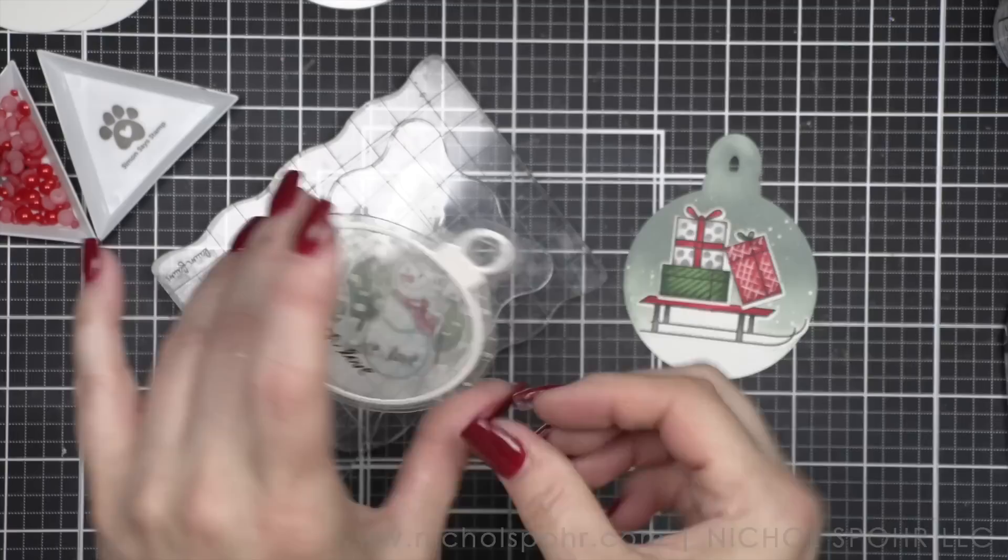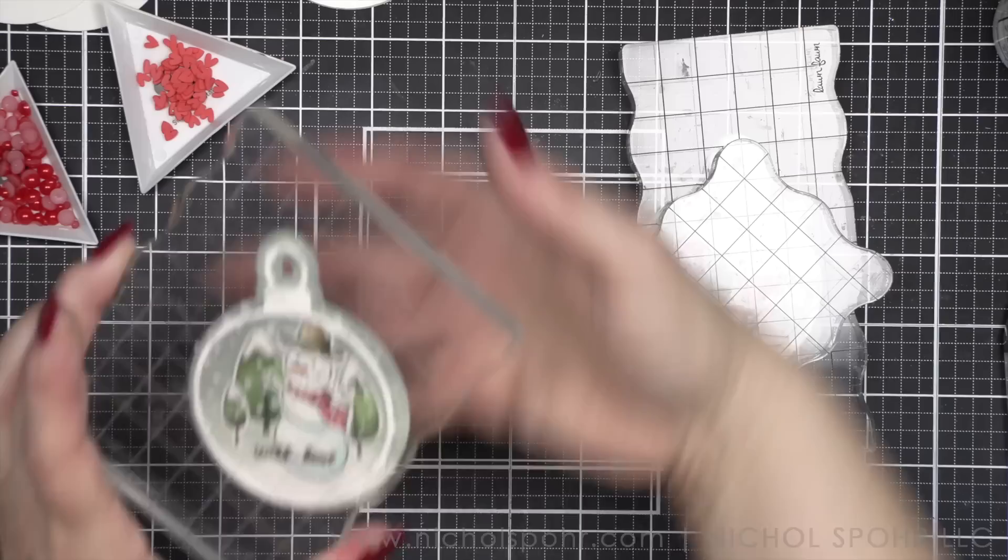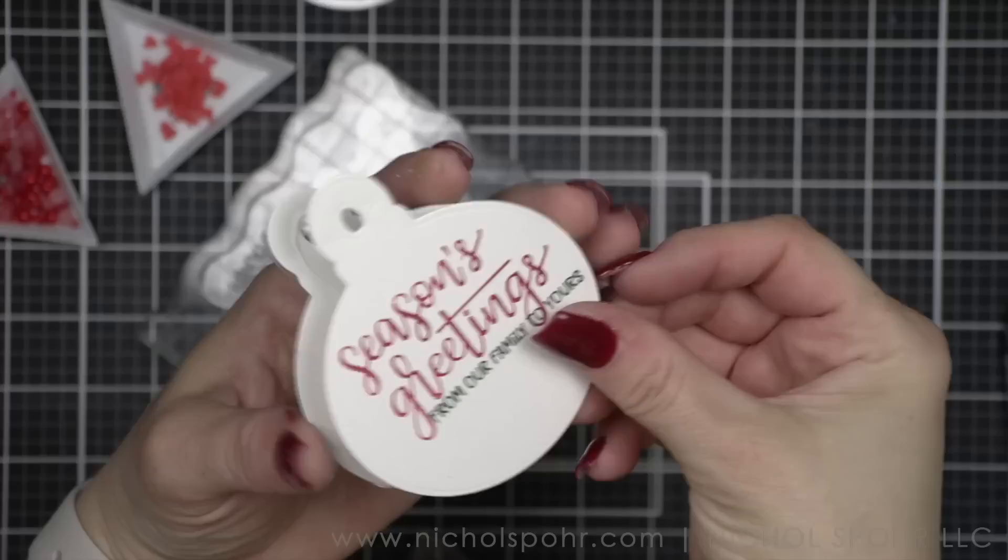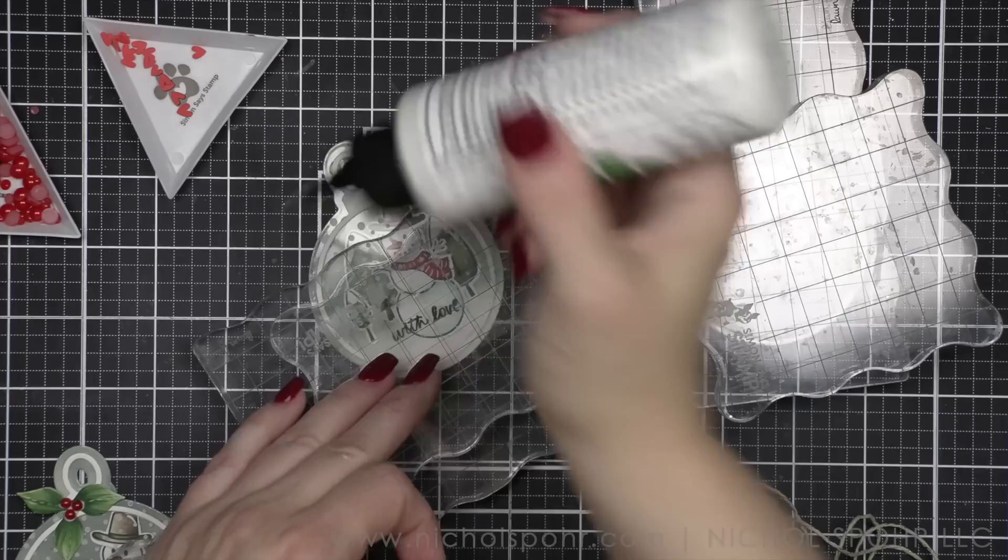I'm going to do that for all three tags. You could make as many of these as you want. Maybe you want this to be your set of gift tags for the year. We're going to put the backers on the remaining two, and then if I didn't get adhesive on a certain couple of places, you can always do that now as well. I did not do the best job gluing them down, so I fixed that.